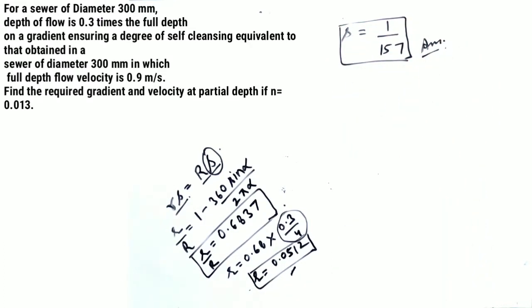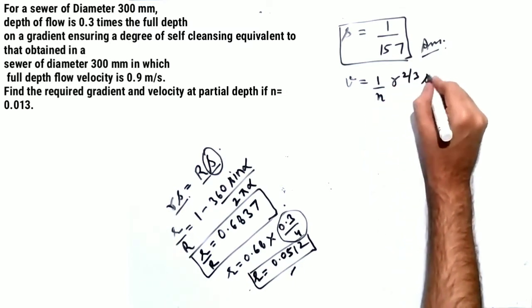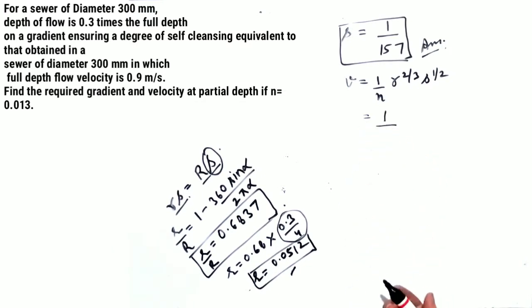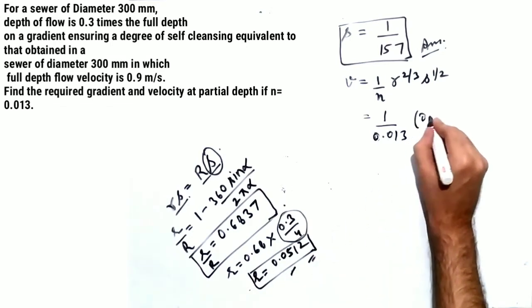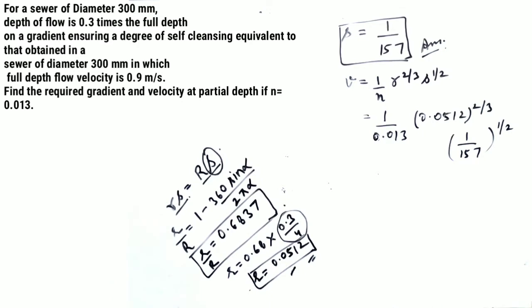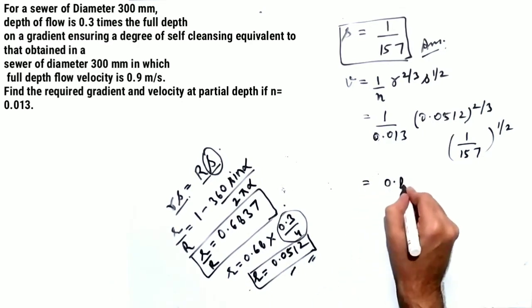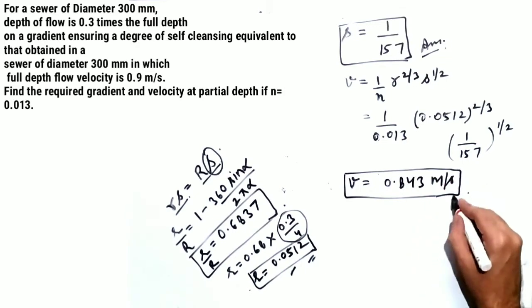So the first part is complete — we have calculated the gradient for the partial depth condition (d = 0.3D). If the self-cleansing degree were not equal, we could not have applied that equation. Now to calculate small v: v = (1/n) × r^(2/3) × s^(1/2) = (1/0.013) × (0.0512)^(2/3) × (1/157)^(1/2). Solving this gives v = 0.843 m/s. This is the required velocity at partial depth.